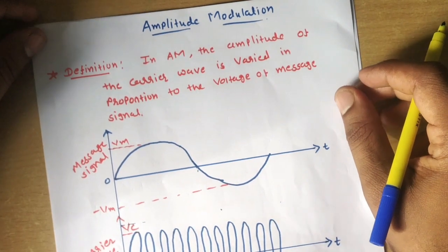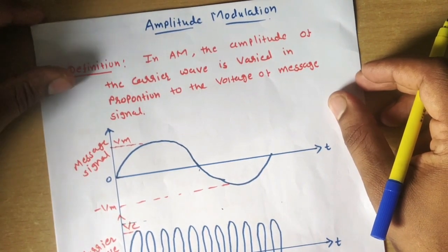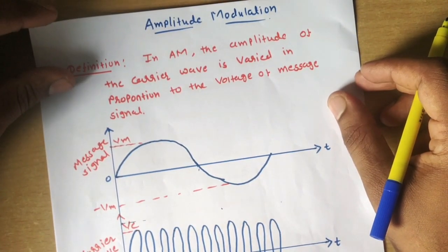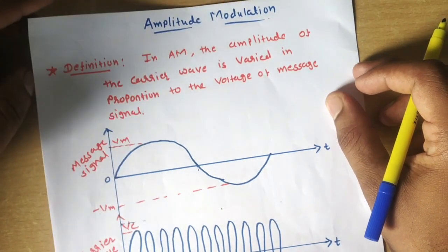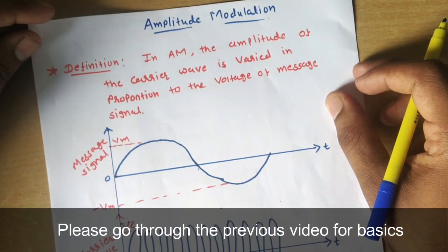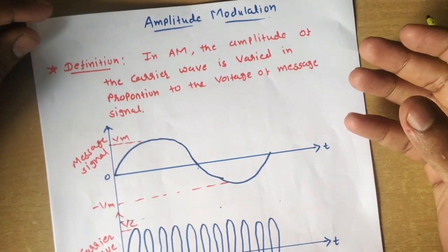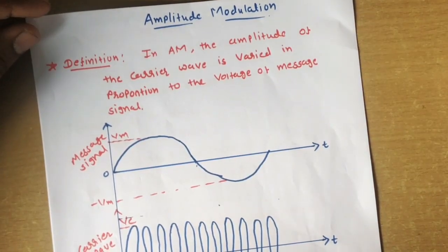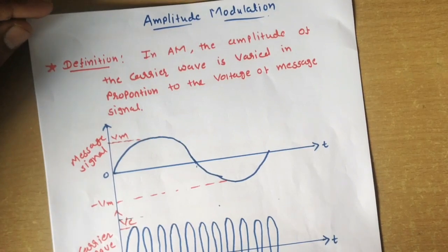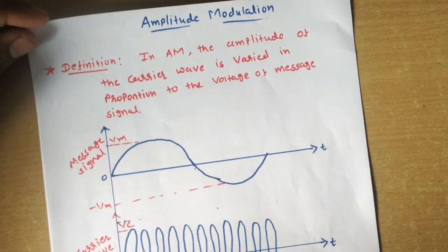Hello students, welcome to the series lecture on analog communication. In the earlier lectures we covered the basic block diagram of a communication system, discussed what is modulation, the need for modulation, and the different types of modulation in analog communication — amplitude modulation, frequency modulation, and phase modulation. Today's topic is amplitude modulation, which is a very lengthy topic.